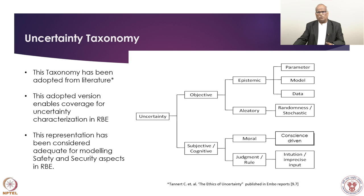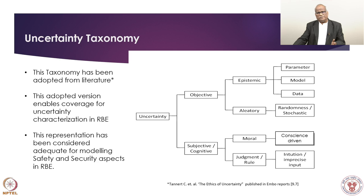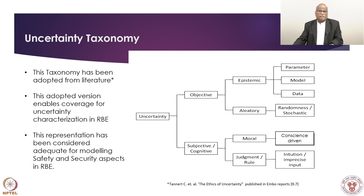We have this taxonomy developed by Tenert and others, which fits risk-based engineering well. Here we talk about epistemic uncertainty and aleatory uncertainty, where we have objectivity in our assessment. Epistemic uncertainty creeps into our system through data, model, parameters, and assumptions — assumptions are one source of uncertainty. Along with uncertainty, there is sensitivity analysis: whatever uncertainty we absorb into our system, we should do a sensitivity analysis by varying that parameter in the range of uncertainty, so we have no surprises in terms of negative evidences.